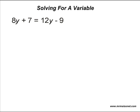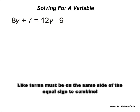The first thing we are going to do is combine like terms in this equation. Because 12 and 8 both have the variable y raised to the exact same power, we would say that those are like terms. We can combine them by moving the 8y over to the right-hand side of the equation or the 12y to the left-hand side of the equation.